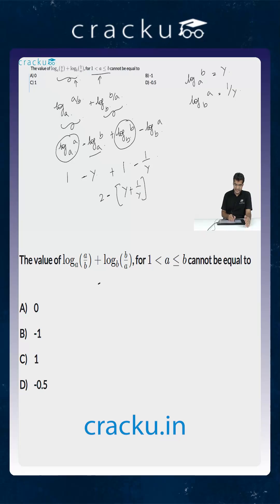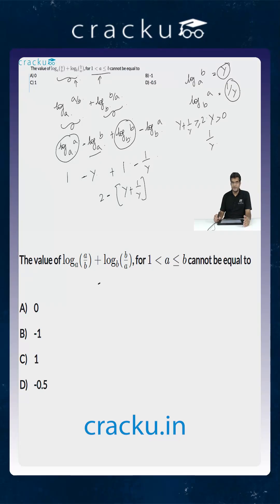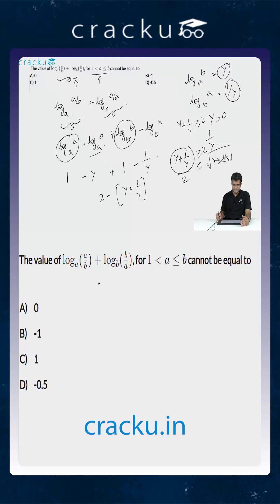Since both a and b are greater than 1, the values of y and 1/y are both greater than 0. By the AM-GM theorem, (y + 1/y)/2 ≥ √(y · 1/y) = 1, which means y + 1/y ≥ 2. Therefore the given expression, which equals 2 minus (y + 1/y), is always less than or equal to 0.